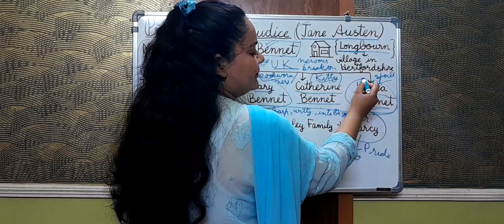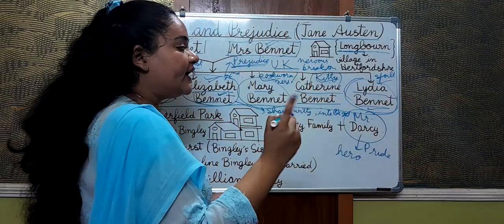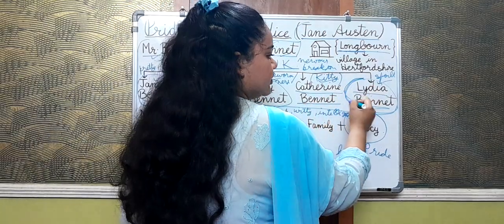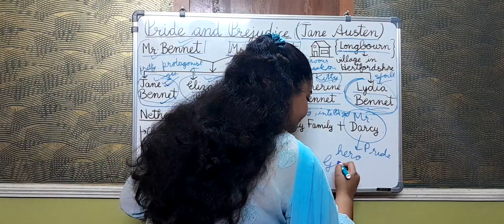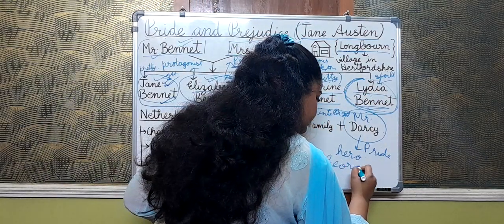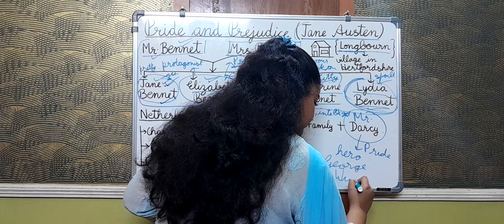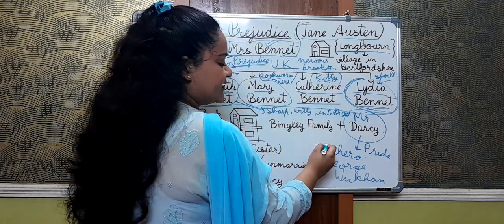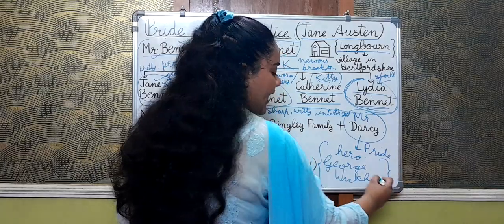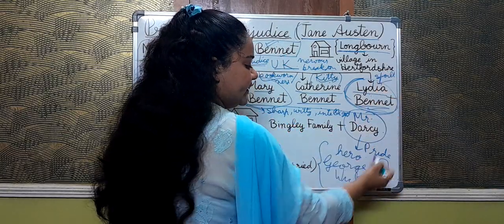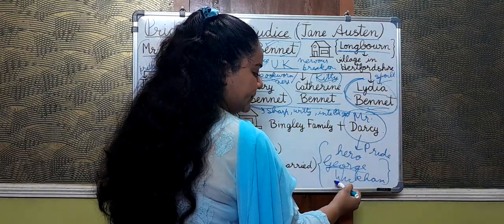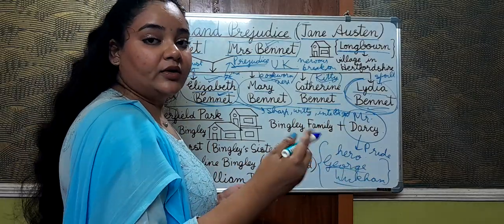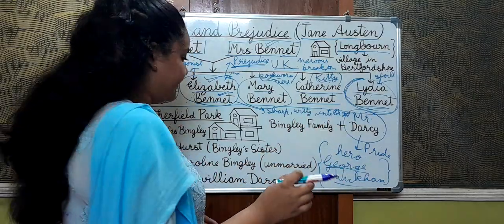You have to remember Lydia's name because of the Lydia-Wickham episode. George Wickham is the villain of the novel, and Lydia Bennet elopes with him in the future chapters which we are about to read.